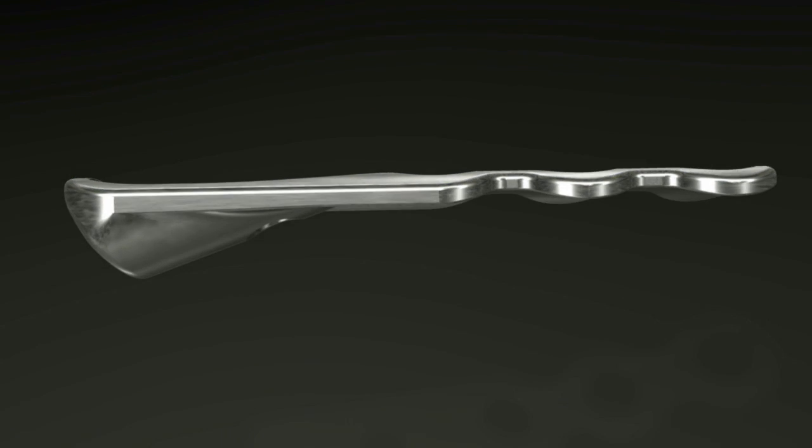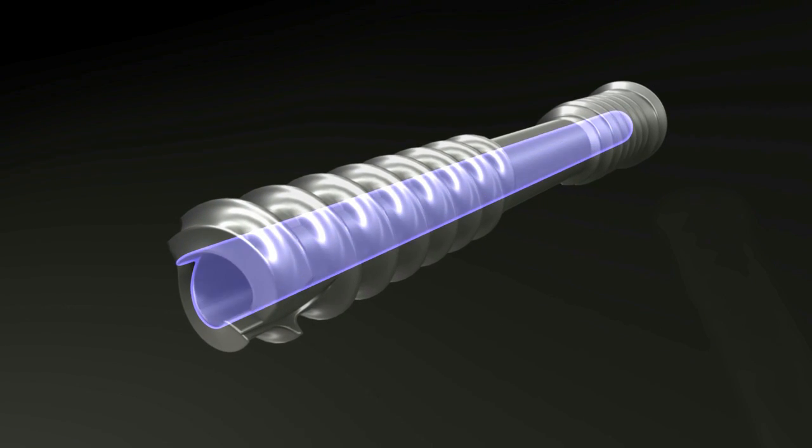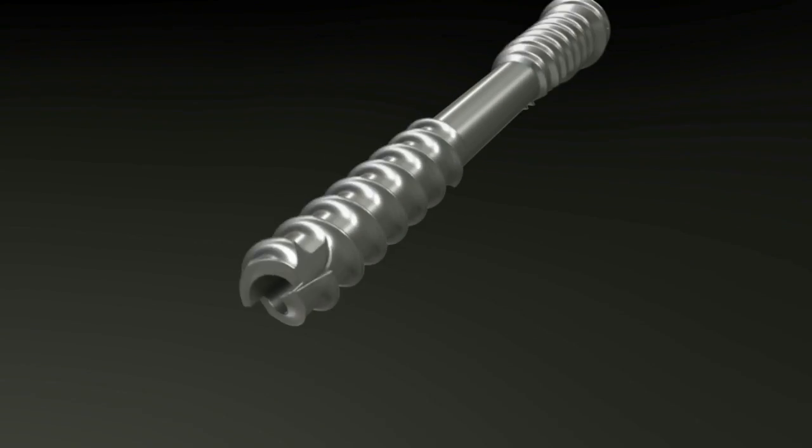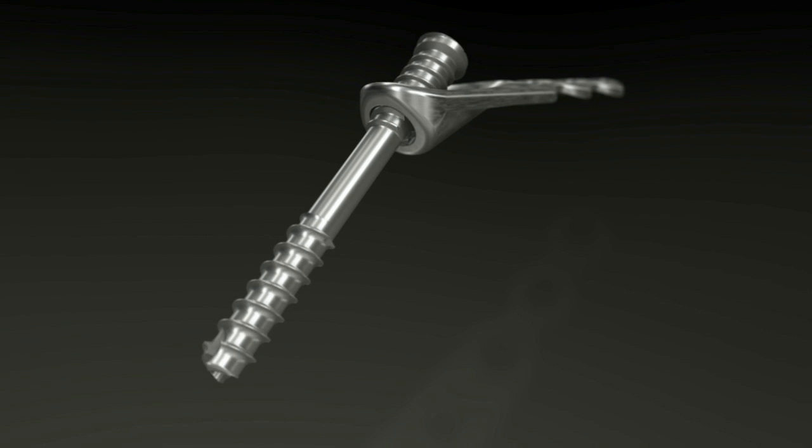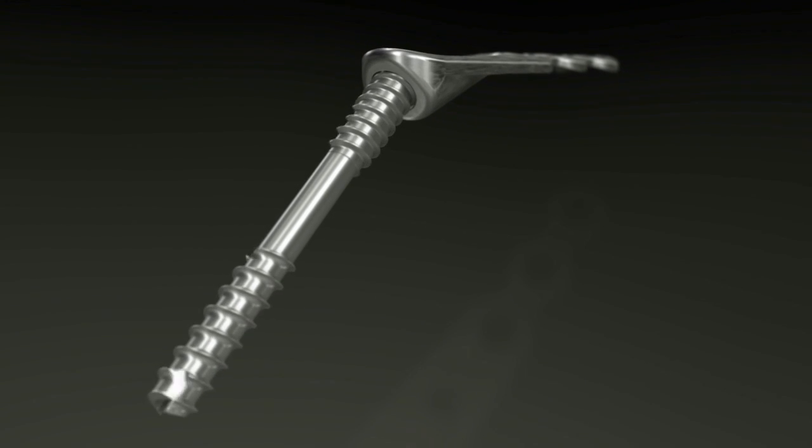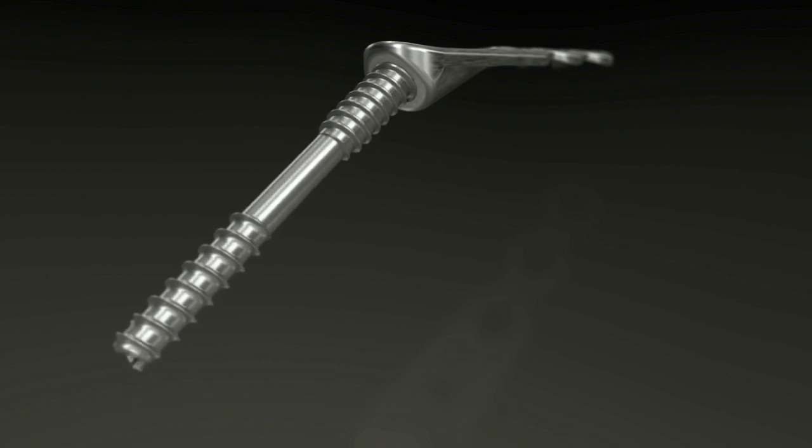The system includes the first cannulated compression screw with locking capabilities. The fusion screw can lock up to 18 degrees from center, allowing for fusion of the joint at a natural resting angle.